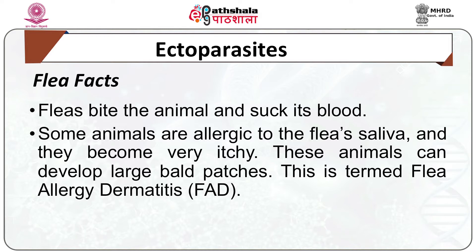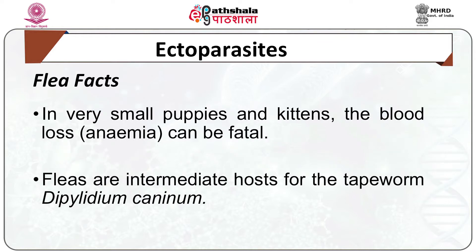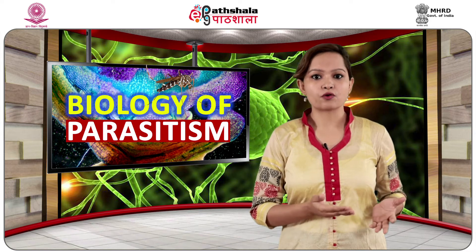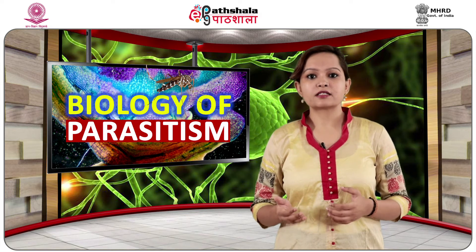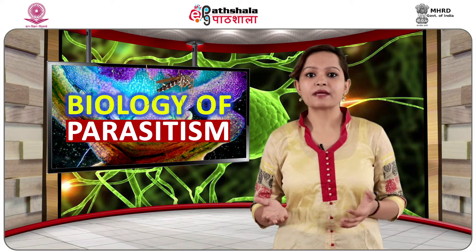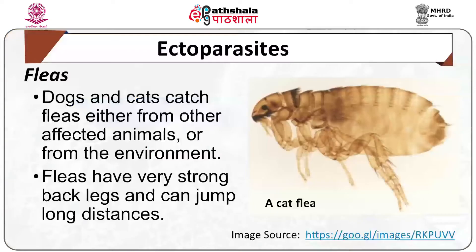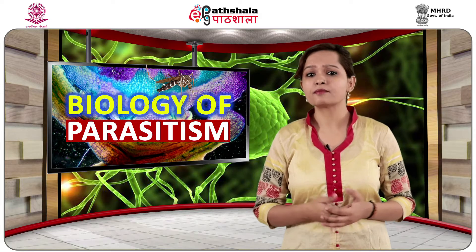Fleas are also vectors of many diseases. They are small organisms with a laterally flattened body. Their body is covered with numerous characteristic bristles or spines called ctenidia. Fleas use these ctenidia to snag hair when the host tries to remove them. They lay eggs either on the host or on the nest of the host. The freshly hatched larvae feed on organic debris or flea feces. Pupae can remain dormant until the availability of a host. Their legs are modified for jumping, and interestingly, fleas can leap more than 100 times their body length.